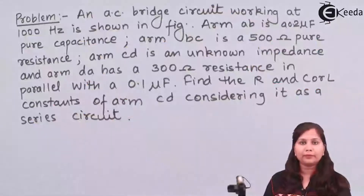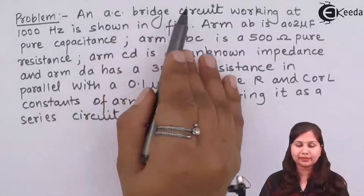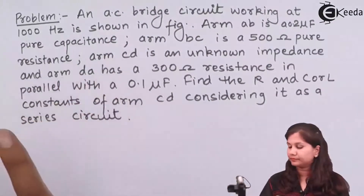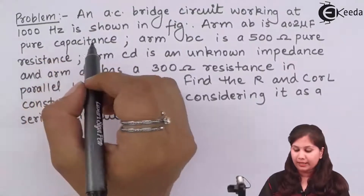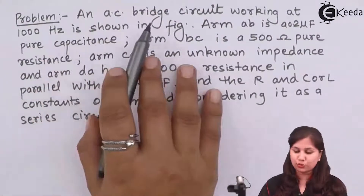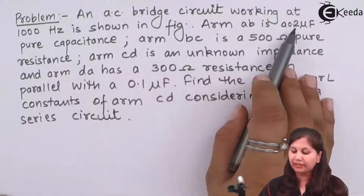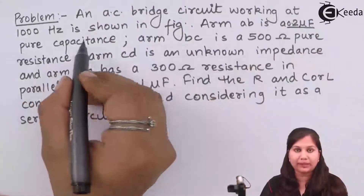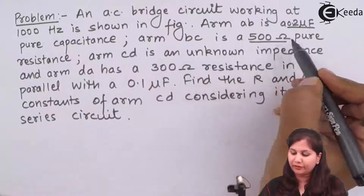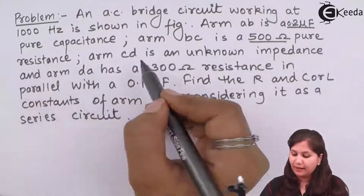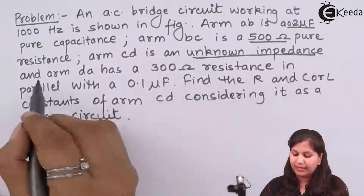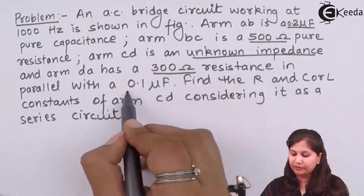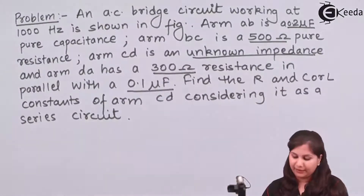Our problem is we are having an AC bridge circuit which is working at 1000 Hz. This circuit is shown in the figure: AB is having 0.2 microfarads pure capacitance, BC is a 500 ohm pure resistance, CD is an unknown impedance, and DA has a 300 ohm resistance in parallel with a 0.1 microfarad capacitance.